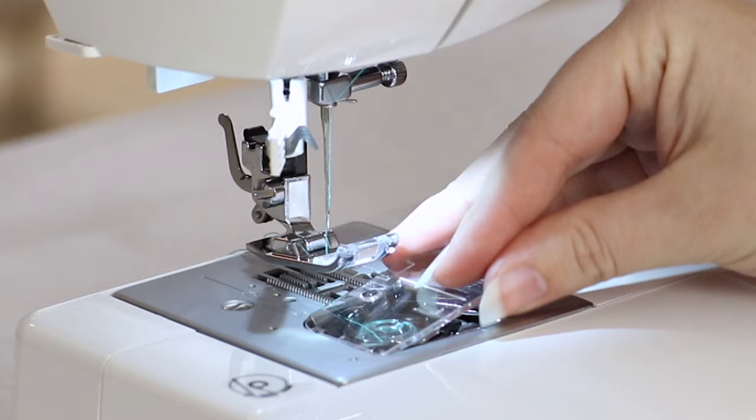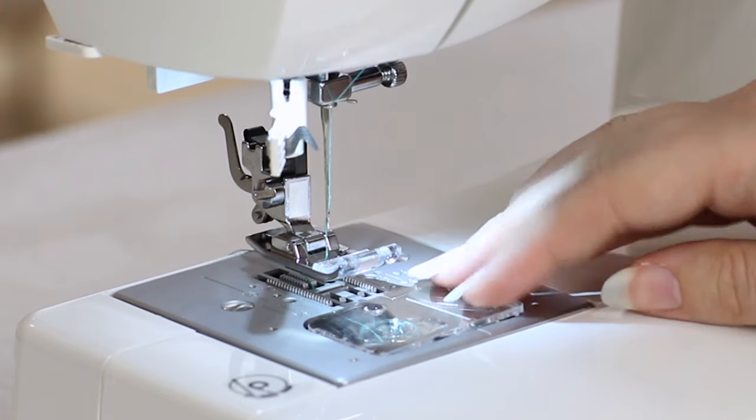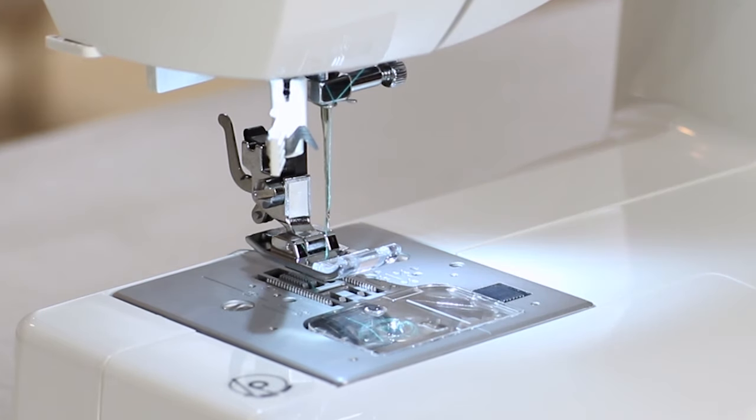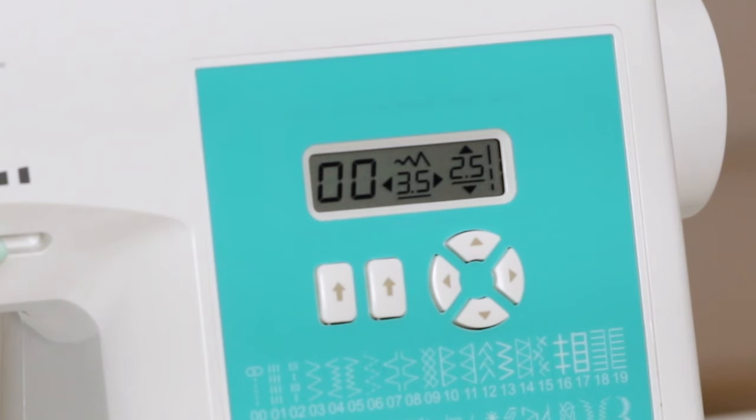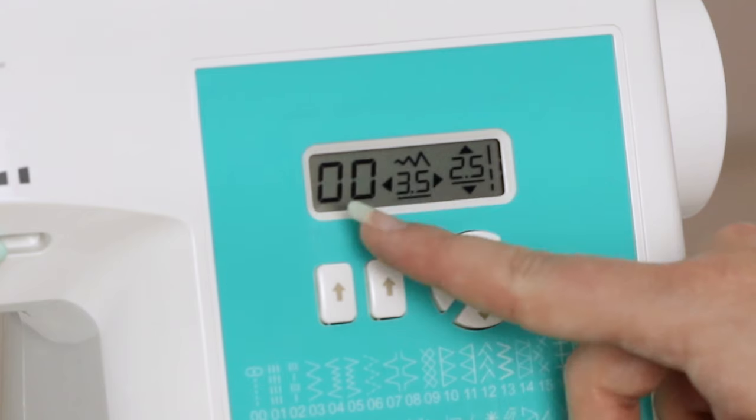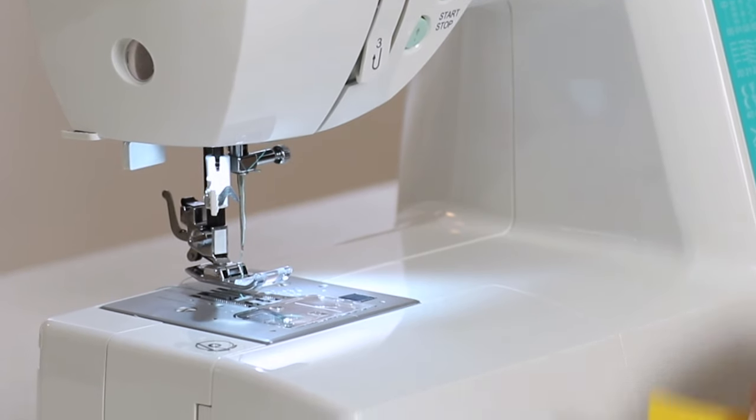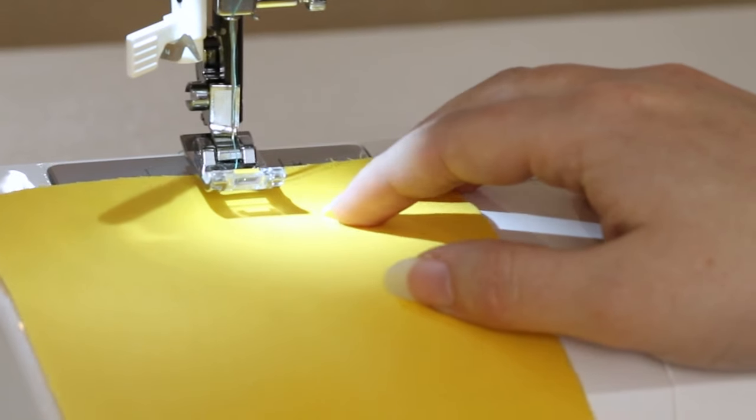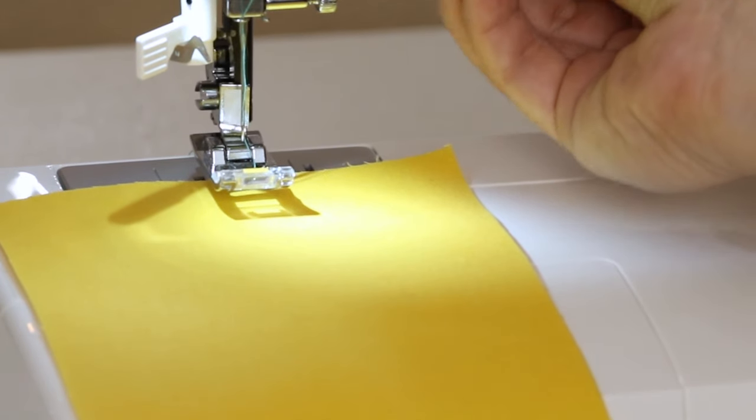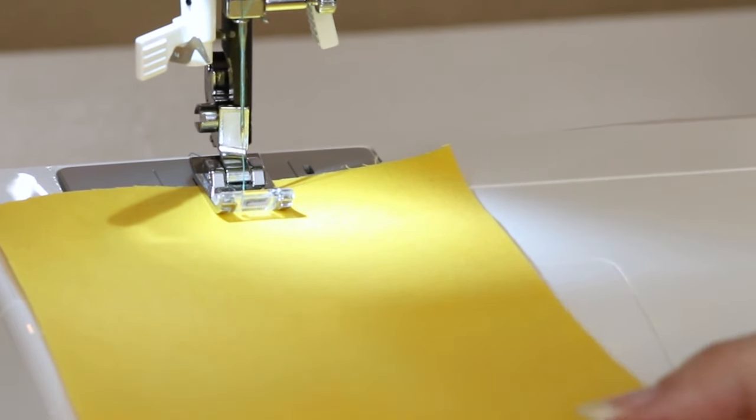Put the clear view cover back on over the bobbin holder, and we're ready to test a stitch. The straight stitch is automatically selected when we turn on our machine, so my straight stitch is already selected. Place the fabric under the presser foot, lower the presser foot, and begin sewing.